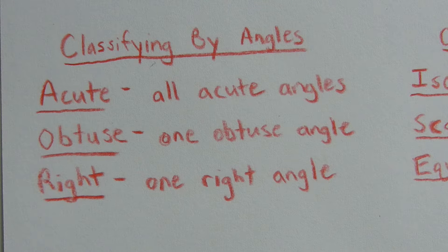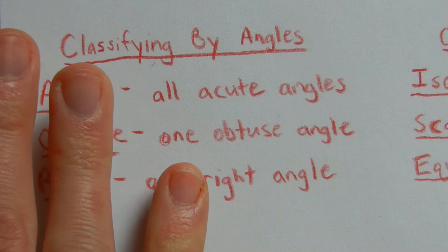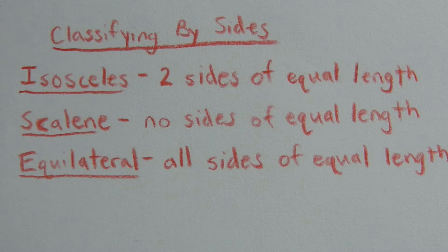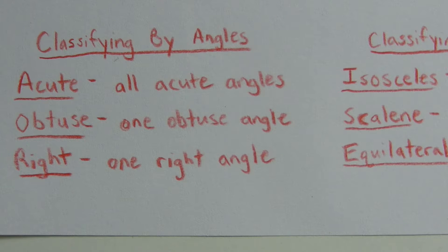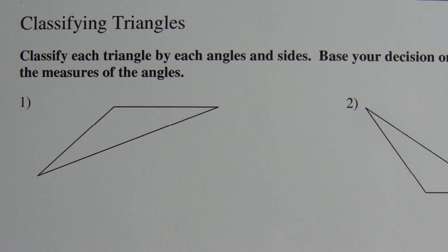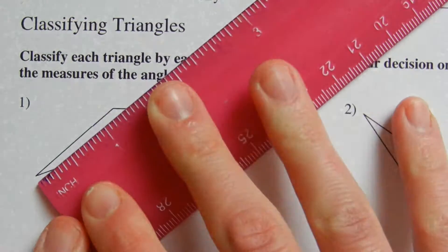For an isosceles triangle, two sides will have equal length. For a scalene triangle, no sides will be equal in length. For an equilateral triangle, all sides are equal length. We can have different combinations such as an obtuse scalene triangle or an acute isosceles triangle. You could also have a right scalene. However, if we have an equilateral, we will just call that equilateral.